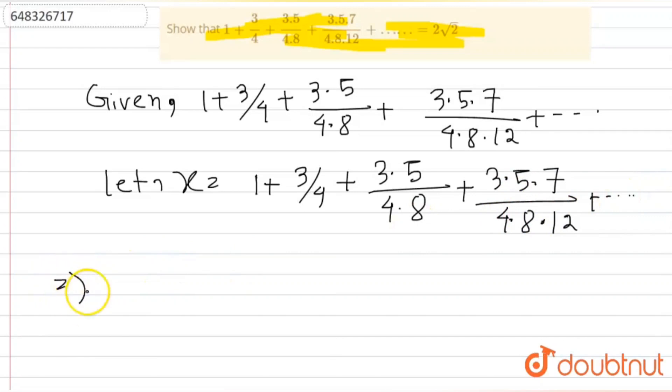equal to, so we are writing this in the form 1 plus 1, 3 by 1 factorial, 1 by 4 whole to the power 1, plus 3 into 5 by 2 factorial, 1 by 4 whole square, plus 3 into